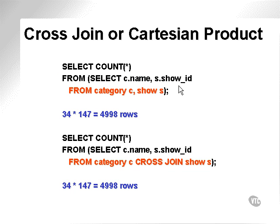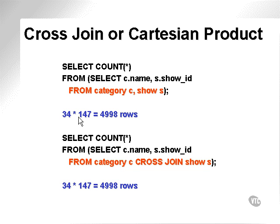This is the Oracle proprietary form of the cross-join wrapped in a COUNT function, and this is the ANSI form wrapped in a COUNT function. What I'm doing is selecting all rows from category and show into a cross-join, which counts all the rows in both tables and multiplies them together in a Cartesian product. The same applies to the ANSI form. I'm going to get 34 times 147, which is 4,998 rows. Let's verify that.